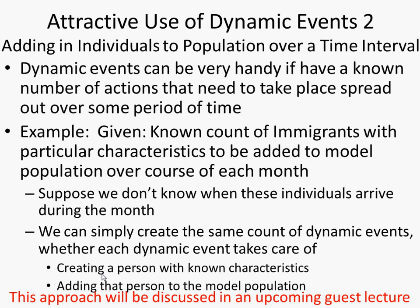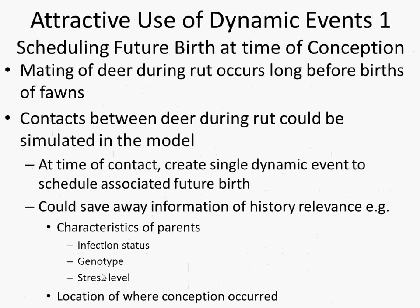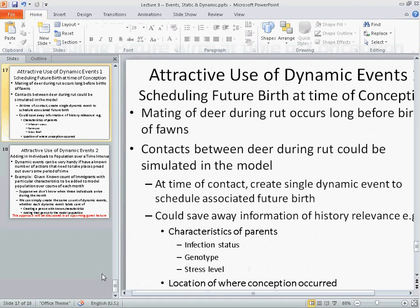Another example would be immigrants coming in — you know how many are going to arrive over the course of a month, but not when during the month. We might create a number of dynamic events, each responsible for creating a single person with known characteristics specified via parameters and adding that person into the model at the scheduled time sometime during the month. Dynamic events separate when the event is created from when it fires off, and save information away so the firing can use the relevant information to create itself.